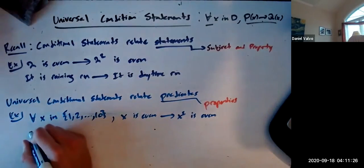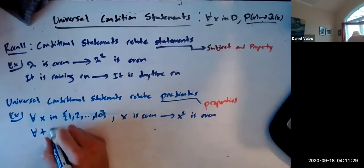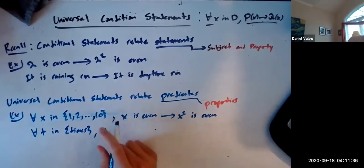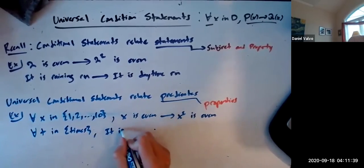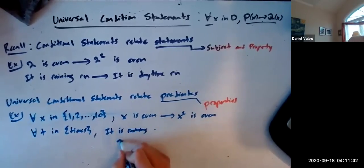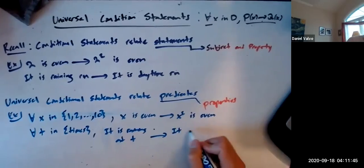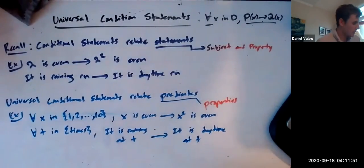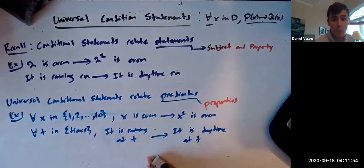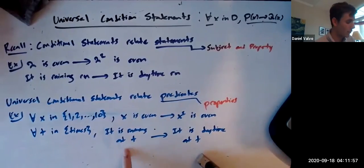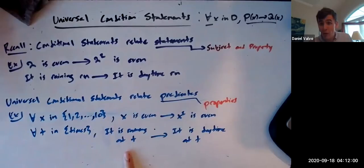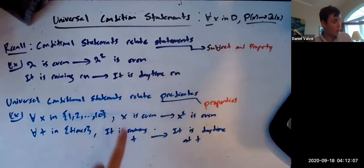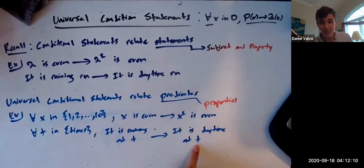And same thing here. So here we can say, for all T in times, it is raining at T implies it is daytime at T. So what this statement is saying is that we can relate the property of raining and daytime, saying that whenever it's raining it must be daytime. We're relating the properties now, not the specific statements. We're not saying right now it's raining and right now it happens to be daytime - we're saying that whenever it's raining, it's also going to be daytime.